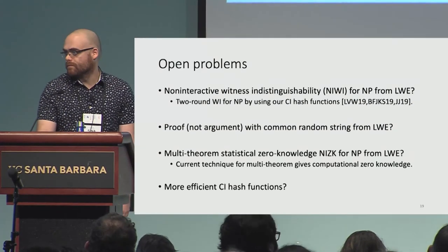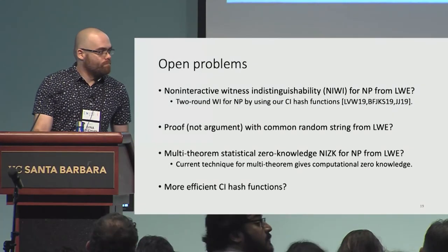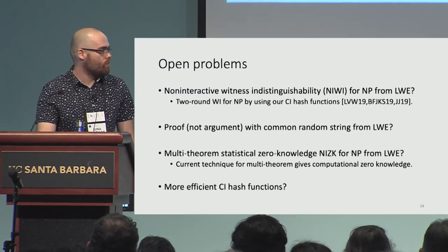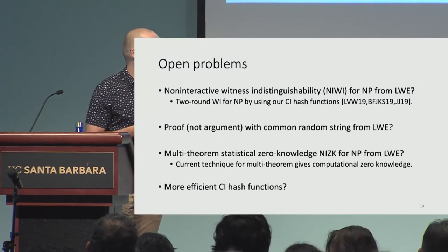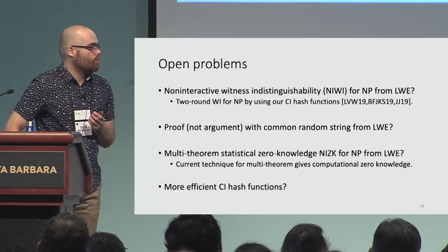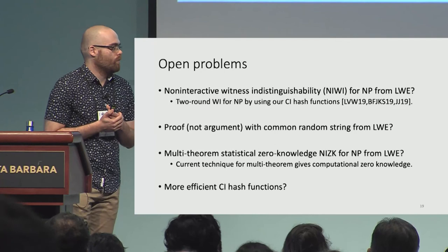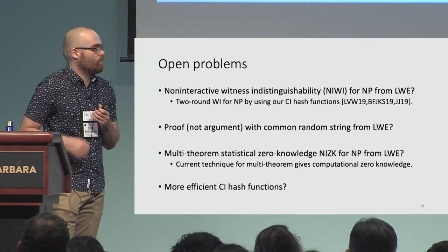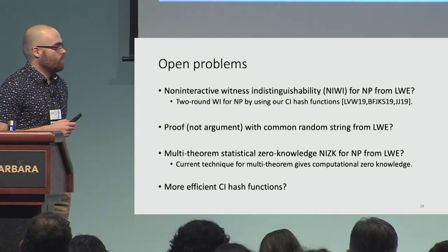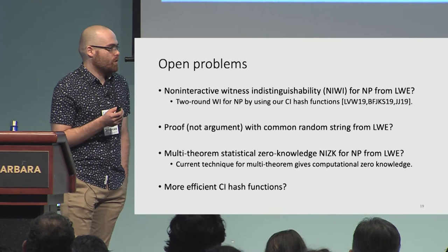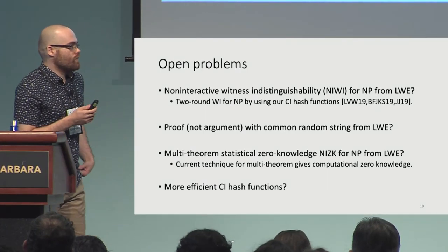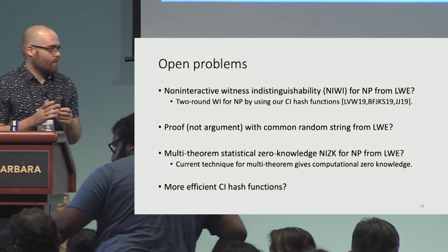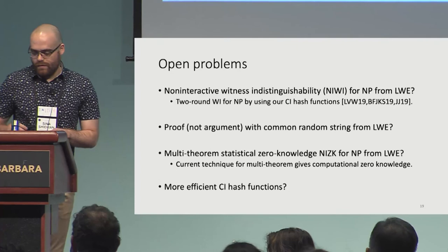We have time for a question or two. Question: This zero-knowledge proof system is based on LWE, but commitments can be built from simpler assumptions like SIS. Is there any way to get fully homomorphic commitments directly from SIS without resorting to LWE? Answer: We do get the fully homomorphic commitments from SIS, but the reason we need LWE is for the underlying zero-knowledge protocol.